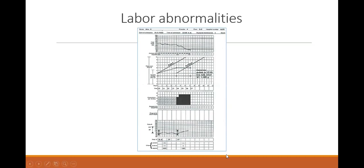To summarize this case: Mrs. H is gravida four, para three, delivered by caesarean section at 17:30 hours secondary to fetal distress and CPD. We can see moulding on the partograph. She delivered a 4 kg baby. The Apgar score is not indicated but she delivered at 17:30 hours.